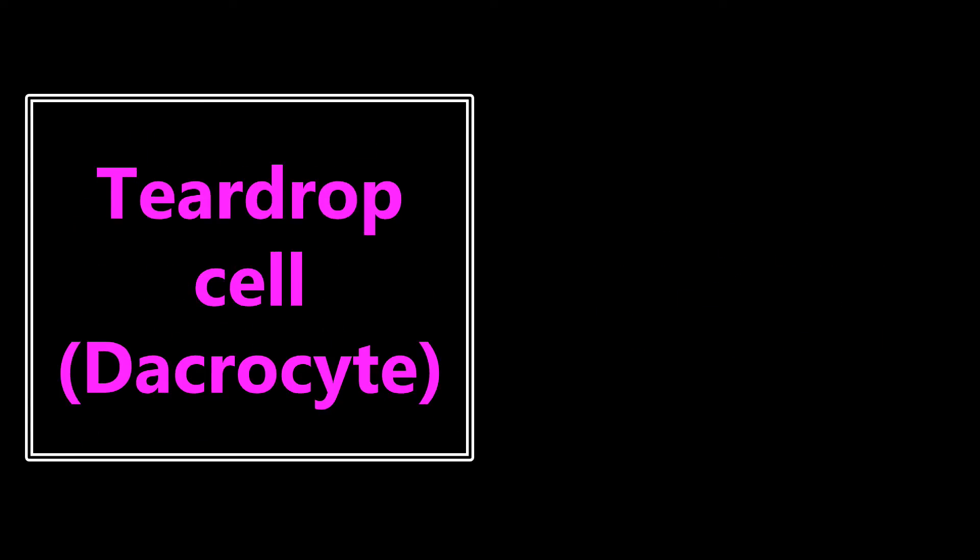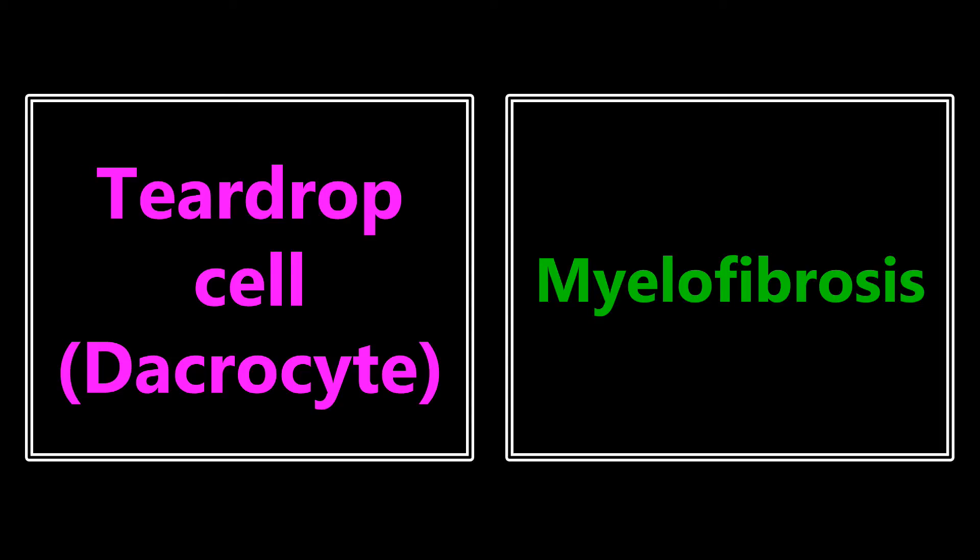A tear drop cell, or dacrocyte — if you see either of those terms or see this on a peripheral blood smear, it's talking about myelofibrosis. This is caused because there's so much fibrosis in the bone marrow that when cells try to squeeze out, they get pinched at the tip, forming the tear drop cell or dacrocyte appearance.